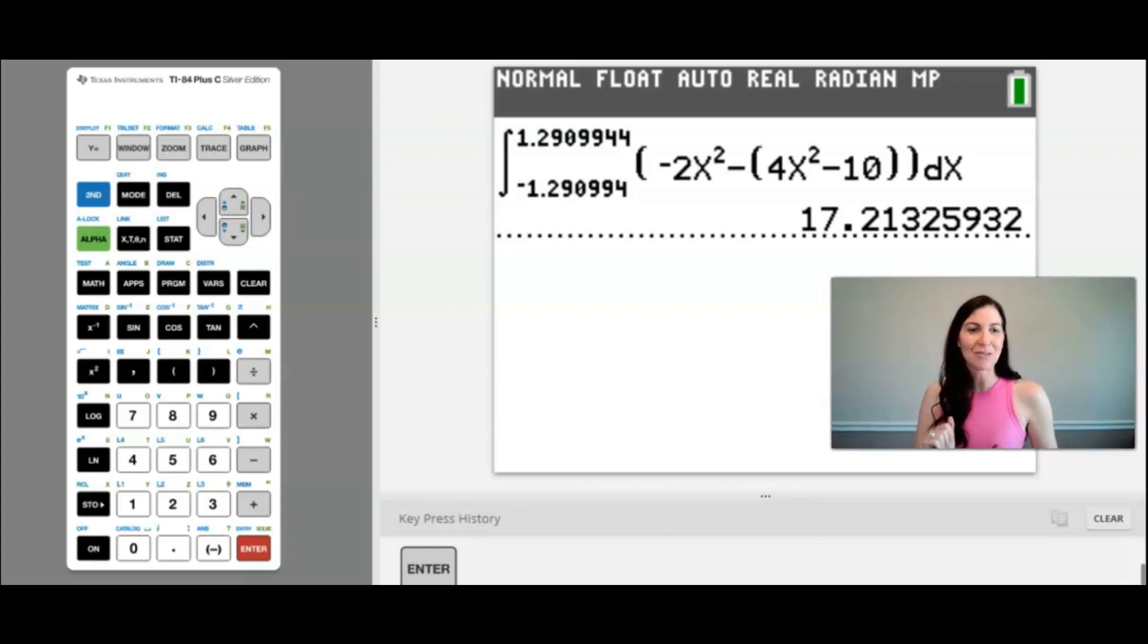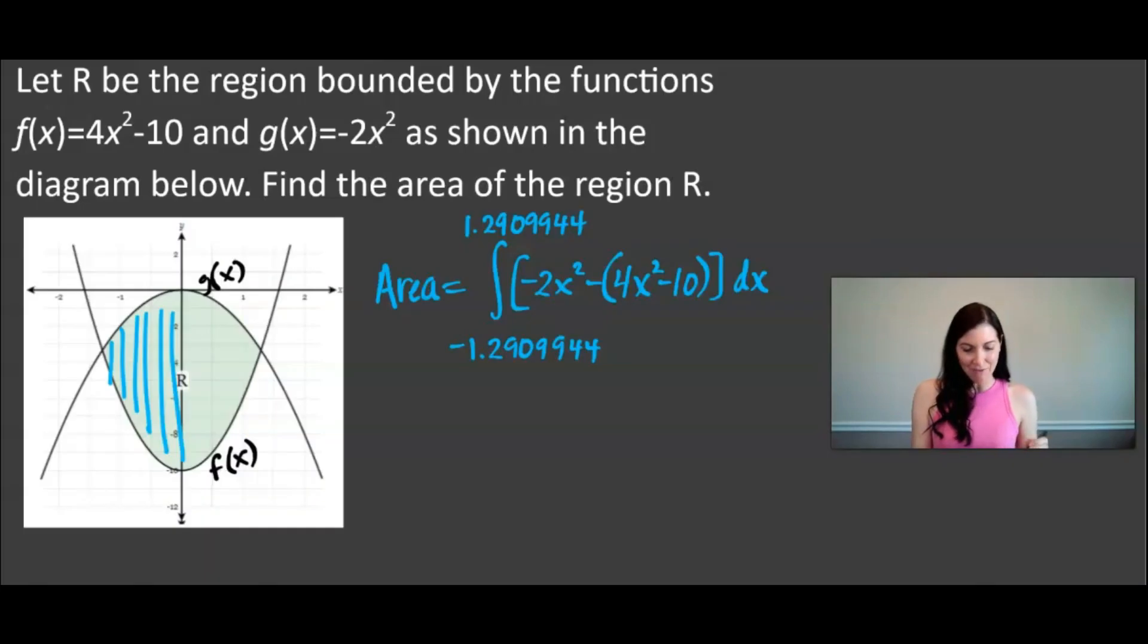I'm going to round to three decimal places so 17.213 it looks like is my final answer, so the area is 17.213. And how cool is that, we use an integral, we used calculus to find the area of this irregular shape that was bounded between two curves, this region R.